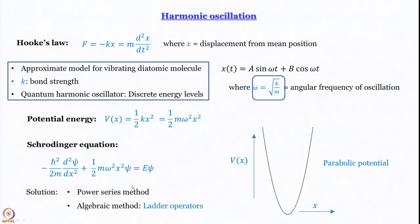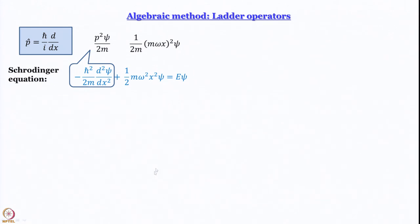This is our Schrödinger equation, and there are two ways of solving it: the power series method, which we will come to later, and the algebraic method, which is what we are doing right now. The most important thing about the algebraic method is the ladder operators. We arrived at the ladder operators by writing the Schrödinger equation and — remembering the operator for linear momentum ℏ/i · d/dx — we plugged it in and wrote the kinetic energy term as p²ψ/2m. Here p is really an operator, the momentum operator, not a number.